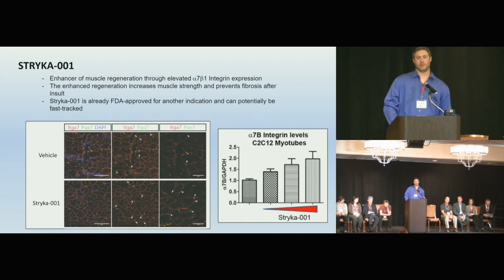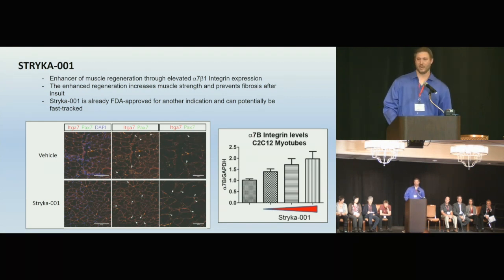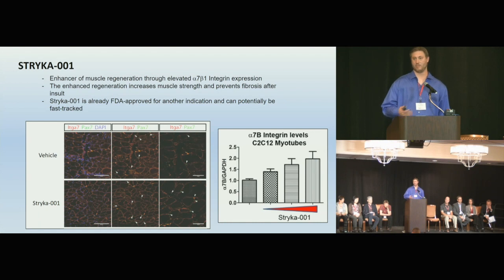The drug is FDA approved, so it could be fast-tracked and potentially enter the clinic rapidly. In the MDX mouse model for Duchenne's, treatment increased Pax-7 cells per millimeter squared — meaning more satellite cells and more muscle regeneration — and created more satellite cell niches. The right panel shows the drug is affecting the target protein as intended.